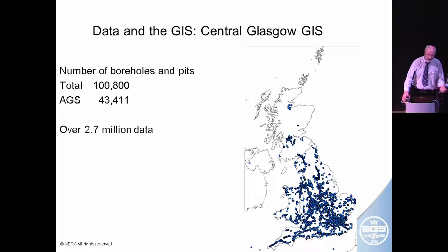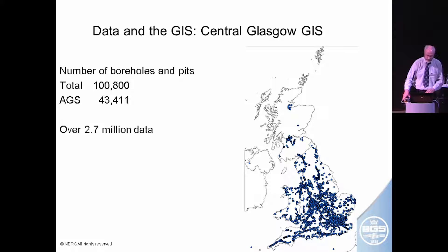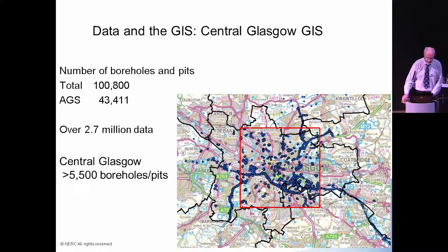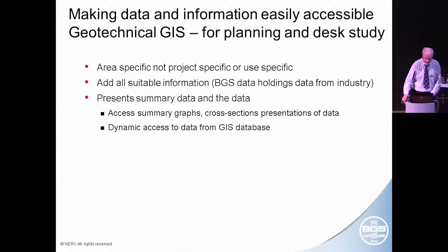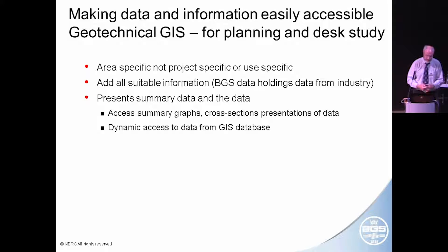That's our current holdings, mostly based on our projects. There's quite a nice number around London, a nice number around Glasgow, and various other cities. The Highways Agency in England and Wales has provided data through their data portal, so we just add the AGS data from that portal to our database. We've got about 100,000 boreholes in there, and over 40% are now AGS digital data format, which certainly speeds everything up. We've got about 2.7 million data points, and in central Glasgow we've got about 5,500 boreholes and pits.